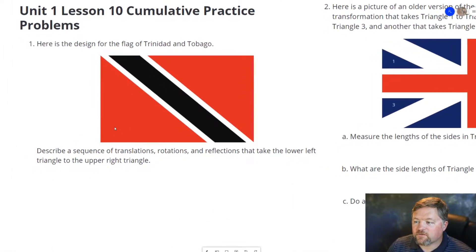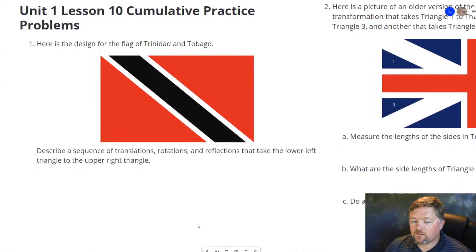Okay, here is the design of the flag for Trinidad and Tobago. Describe a sequence of translations, rotations, and reflections that take the lower left triangle to the upper right triangle. So to take this triangle and put it here, the real easy way to do this is find the center point and rotate 180 degrees.